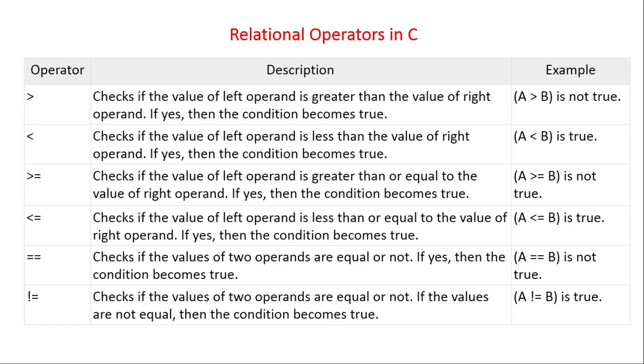The next operator is less than or equal to (<=), which checks if the value of the left operand is less than or equal to the value of the right operand. If yes, then the condition becomes true.